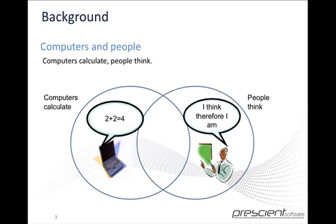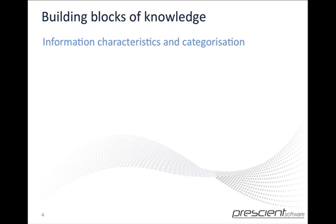Semantic technology sits between the two. It utilizes the calculative power of computers and puts that into a format that best aids how people think. So how does that work? First of all, we have to look at the building blocks of information and how we characterize that.